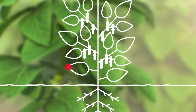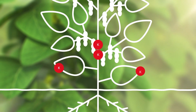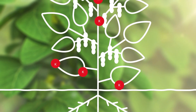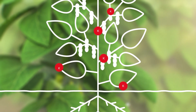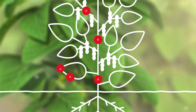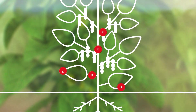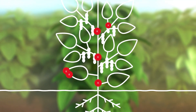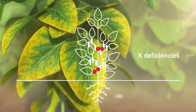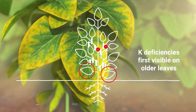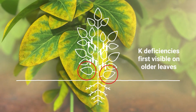Some nutrients, such as potassium, can move easily within the plant through the phloem vessels. If a plant has a lack of potassium, the potassium remaining is moved to the younger leaves and fruits, because these are the most important spots for plant growth. Therefore, potassium deficiencies in the plant can be spotted on older leaves first.